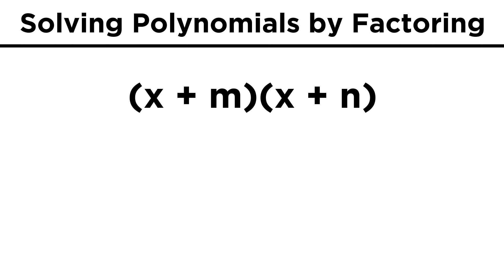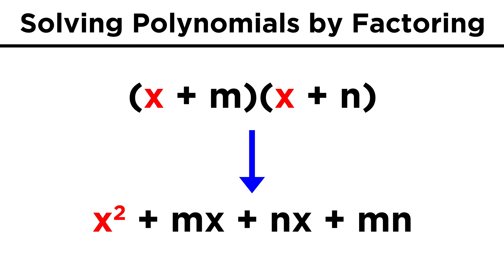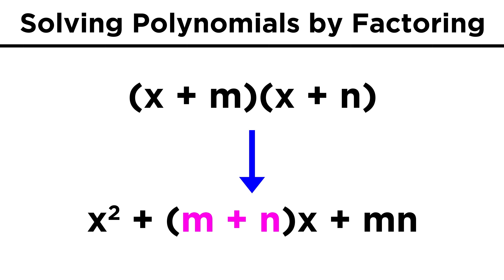First, we have to understand that when we multiply binomials, like (x + m)(x + n), we get x² + mx + nx + mn. We can combine the x terms and get (m + n)x.